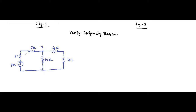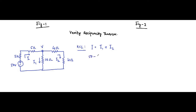Let us assume the current flowing from the source is I, here it is I1, and here it is I2. The KCL equation is I equals I1 plus I2. Writing it in terms of voltage and resistance: (50 minus V) divided by the total resistance 5 plus 5 equals 10, that gives I. For I1...